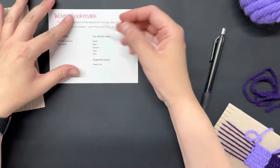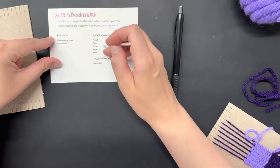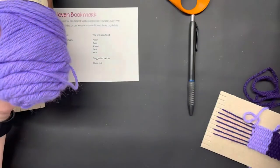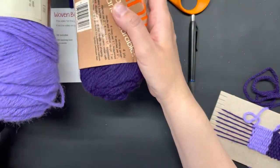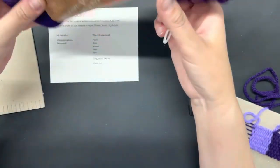You'll also need a pencil or a pen, a ruler, scissors, tape, and yarn. I recommend two or three colors to give your project some variation, and today we're just going to be going over a very basic stitch.